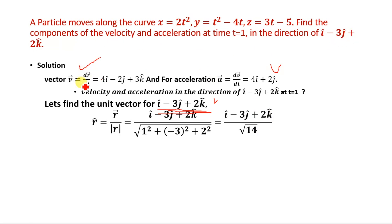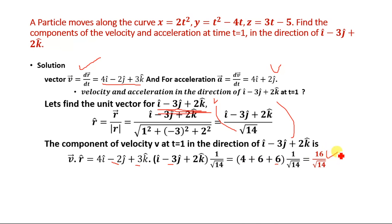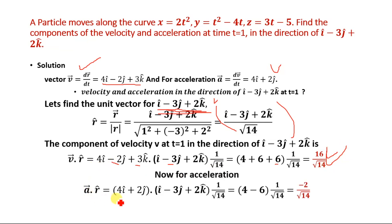The component of velocity in the direction of i - 3j + 2k is the dot product v · unit vector = (4i - 2j + 3k) · (i - 3j + 2k) / √14. Computing: 4(1) + (-2)(-3) + 3(2) = 4 + 6 + 6 = 16. So the velocity component is 16/√14.